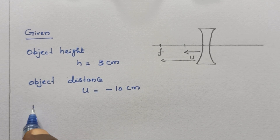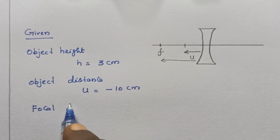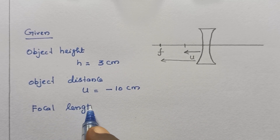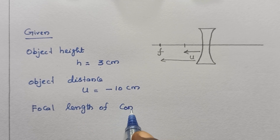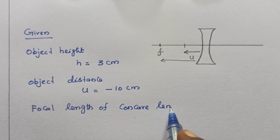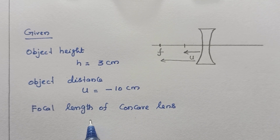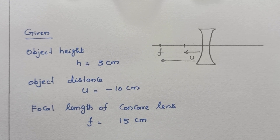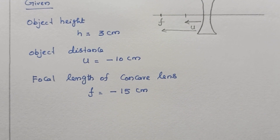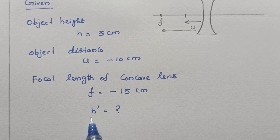Next, focal length of concave lens is given, which is f equal to 15 cm. For a concave lens, the focal length is negative. So these are the given data. What is asked? The size of the image is asked — that is, h dash is asked. This is the size of the image.